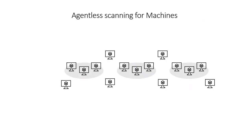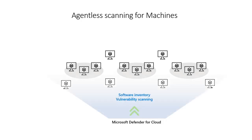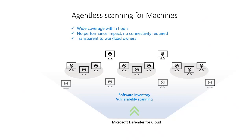With agentless scanning for VMs, you will get wide visibility on installed software and vulnerabilities. Moreover, you don't need to open ports for agent communication or whitelist any URLs. One more advantage is it works by analyzing disk snapshots of your VMs, so without interfering with the running VMs, there is no performance impact on your machine.